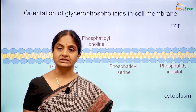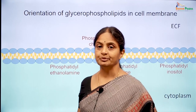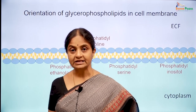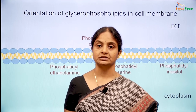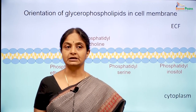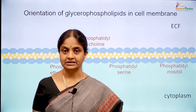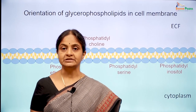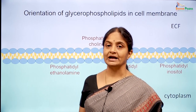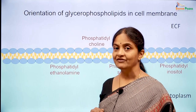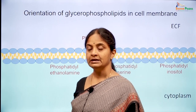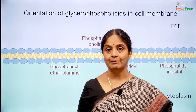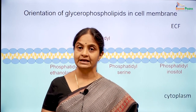There are other enzymes called scramblases which scramble this polarity and allow phospholipids to move to either leaflet. Scramblases are activated when a cell undergoes apoptosis — the mechanism of programmed cell death, where every normal cell is programmed to die after a while. When this happens, phospholipids normally found on the inner leaflet move to the outer leaflet. Finding phosphatidylserine on the outer leaflet is an 'eat me' signal for macrophages, which then come and phagocytose that cell and remove it from the system.